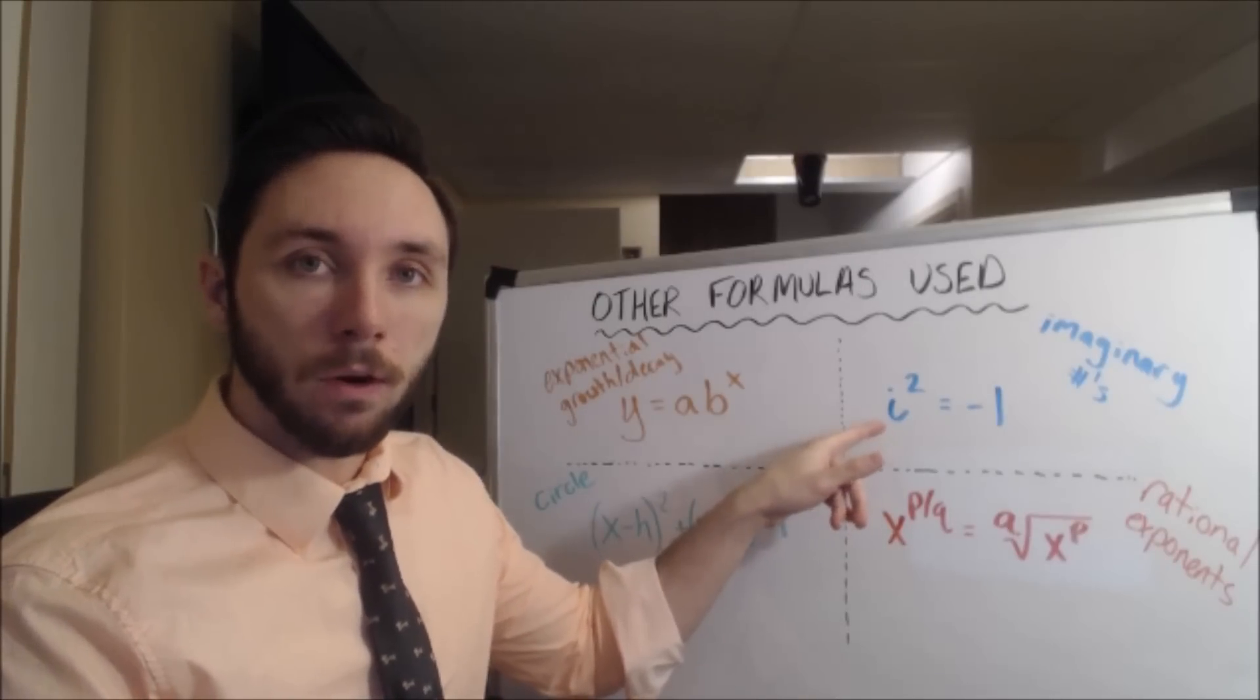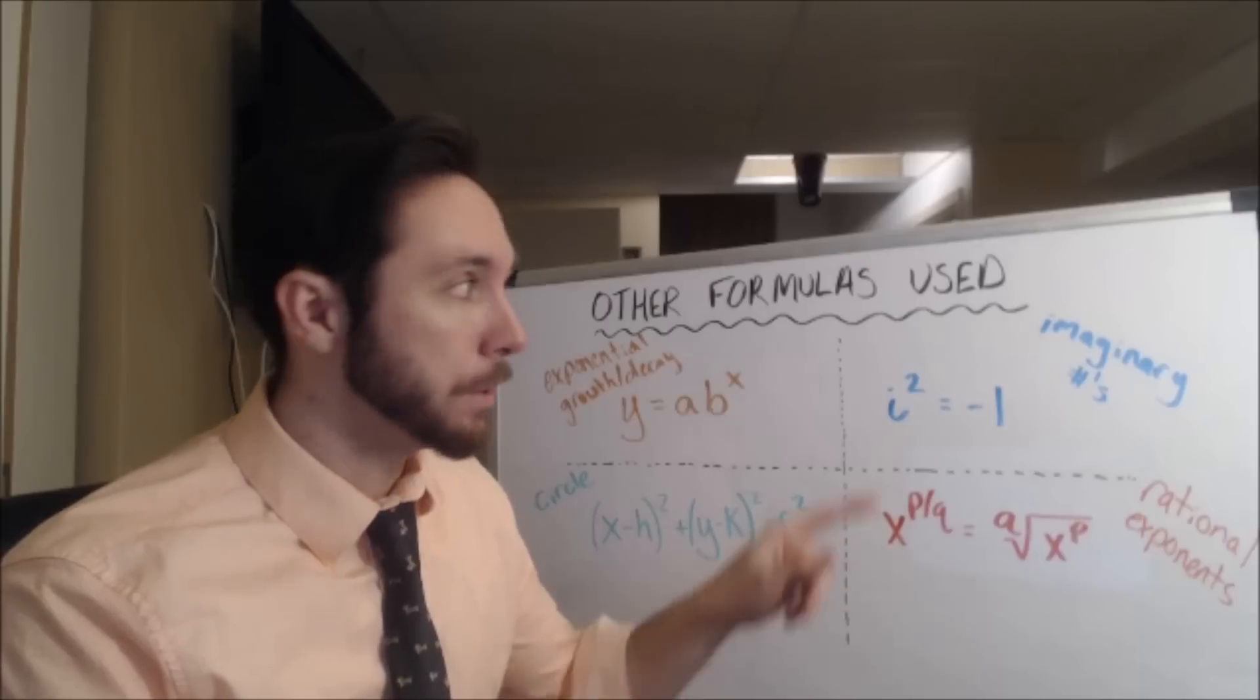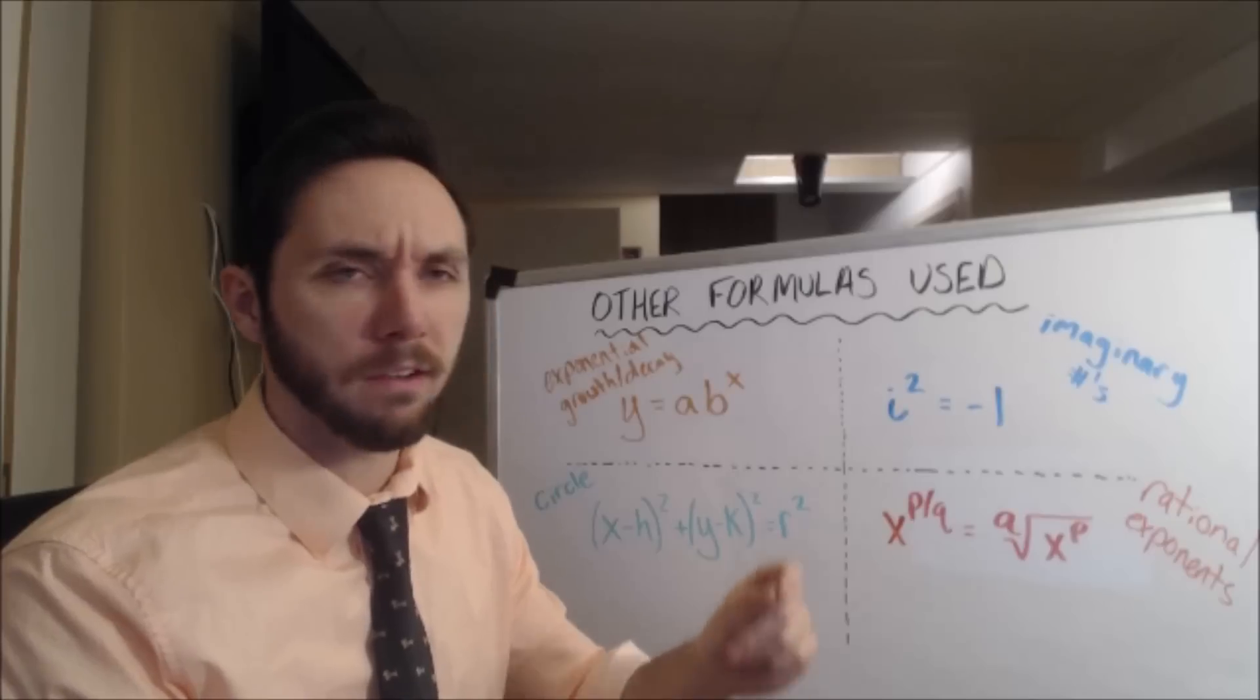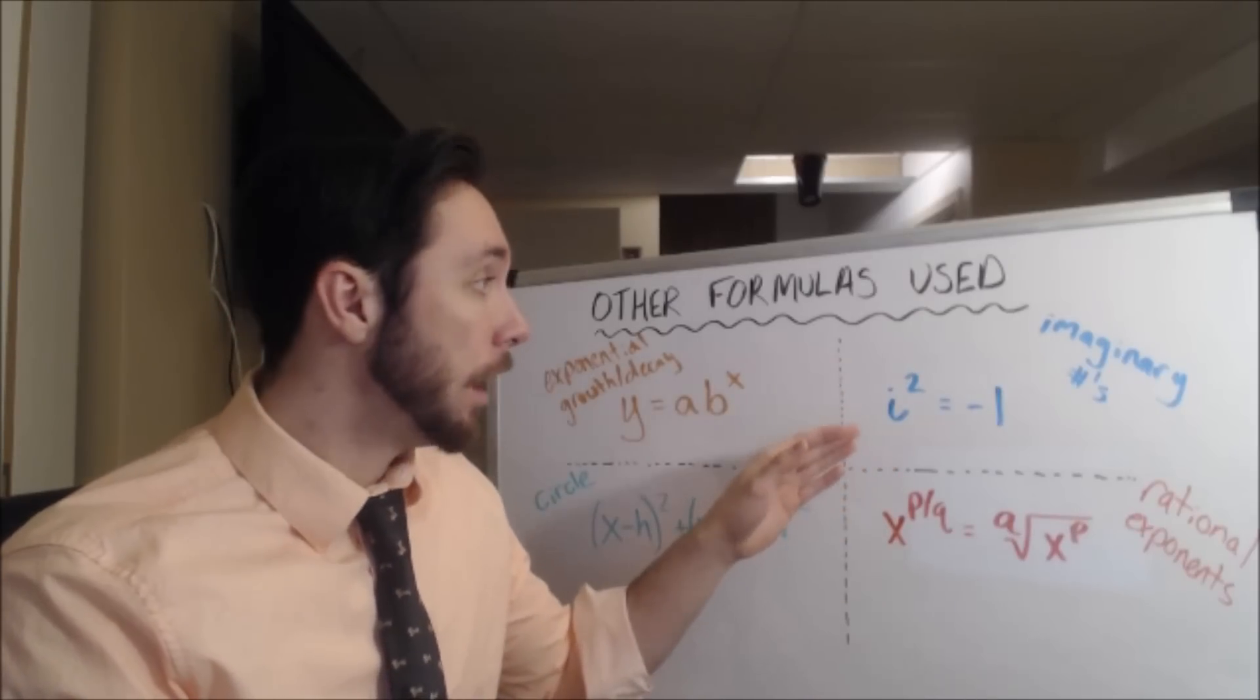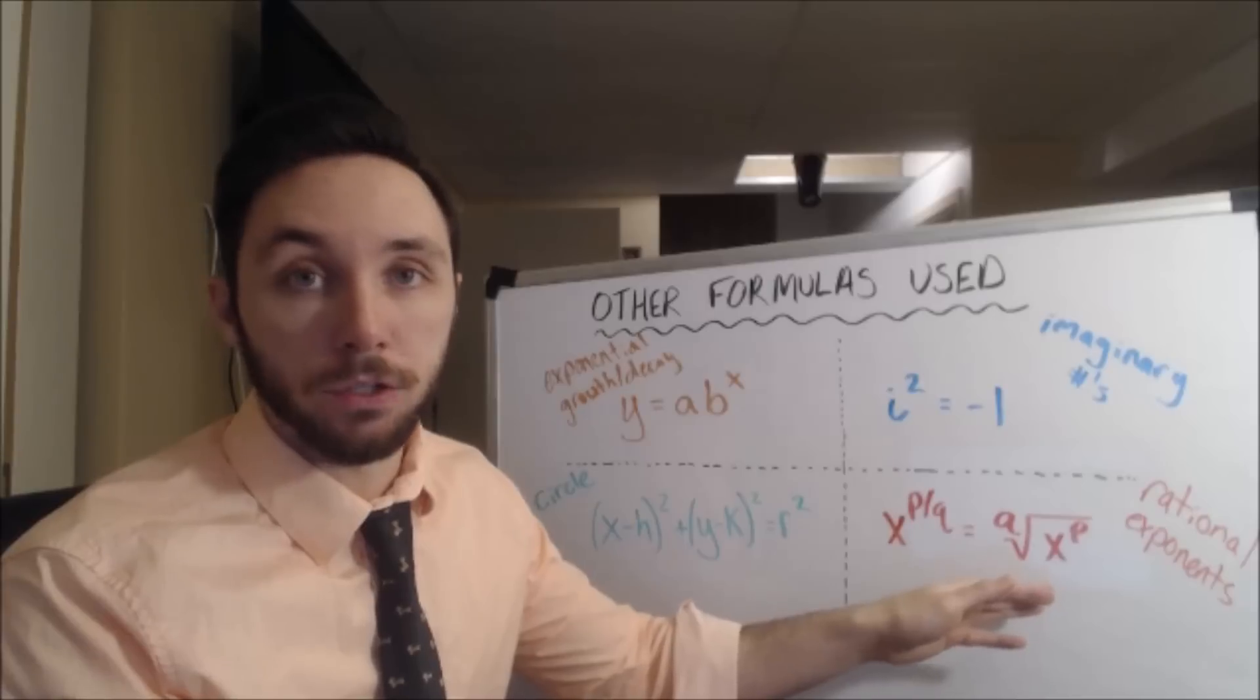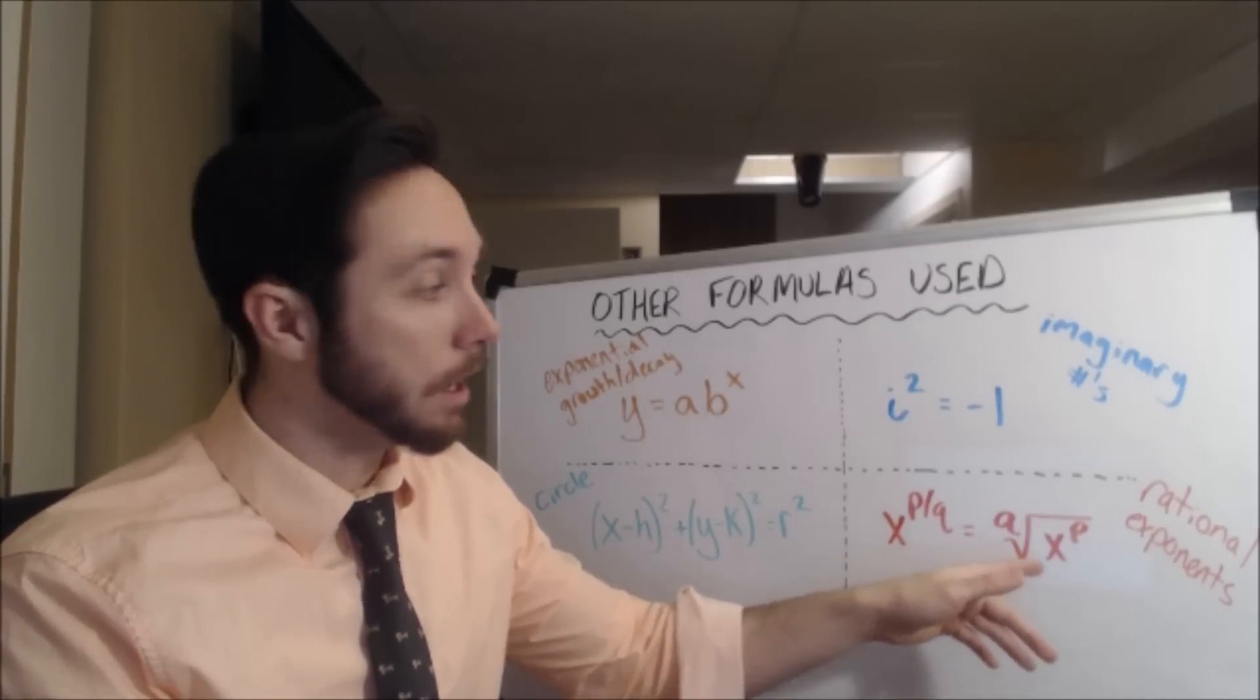i squared is equal to negative 1. So on the ones that do have i, the imaginary unit, in play, they will give you the disclaimer that i is equal to the square root of negative 1. But they don't tell you that i squared is equal to negative 1. I mean, of course, you can use your intuition there based on what they give you, and maybe that might be enough of a cue for it to click. Oh, yes, I remember i squared is equal to negative 1. But, you know, maybe it doesn't. So this is one of the other ones that you should know before entering the SAT. And the last one is how to convert rational exponents. So going from a fractional exponent to radical notation, you know, playing around with the index and power. So if you have x to the p over qth power, this can be rewritten as the qth root of x to the pth power.